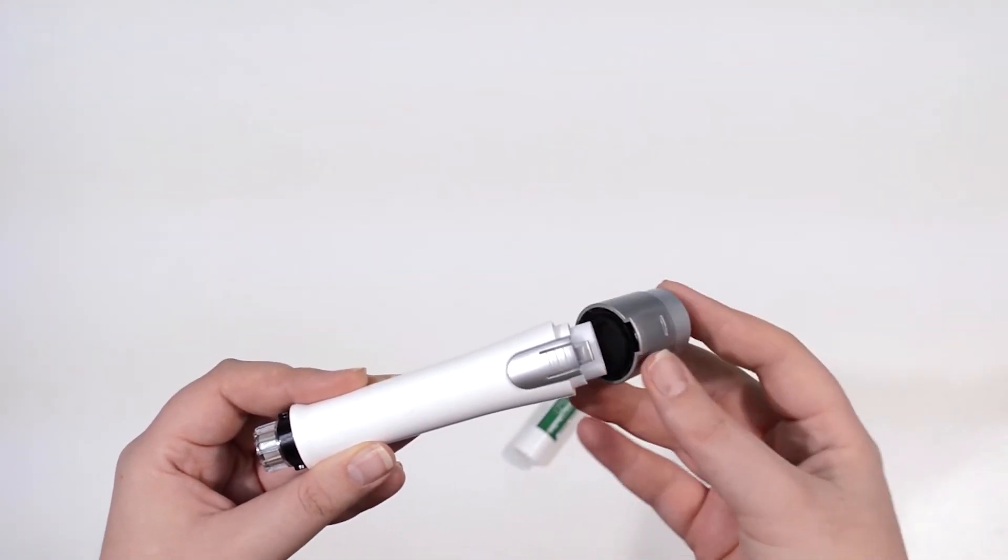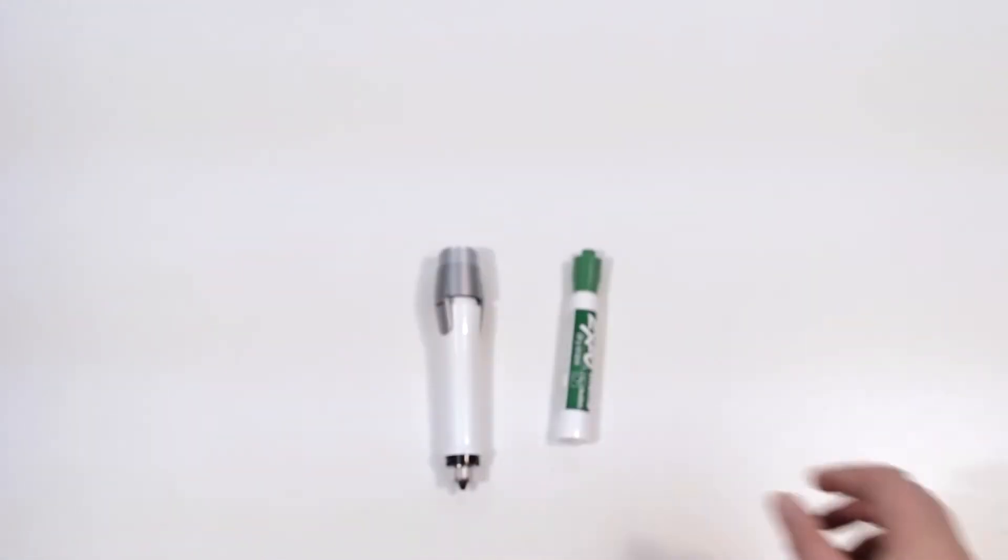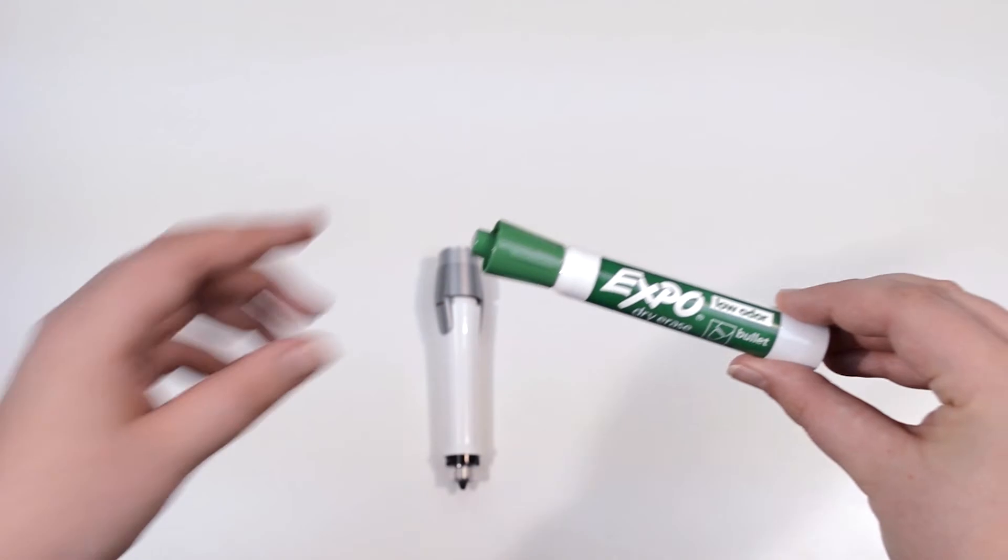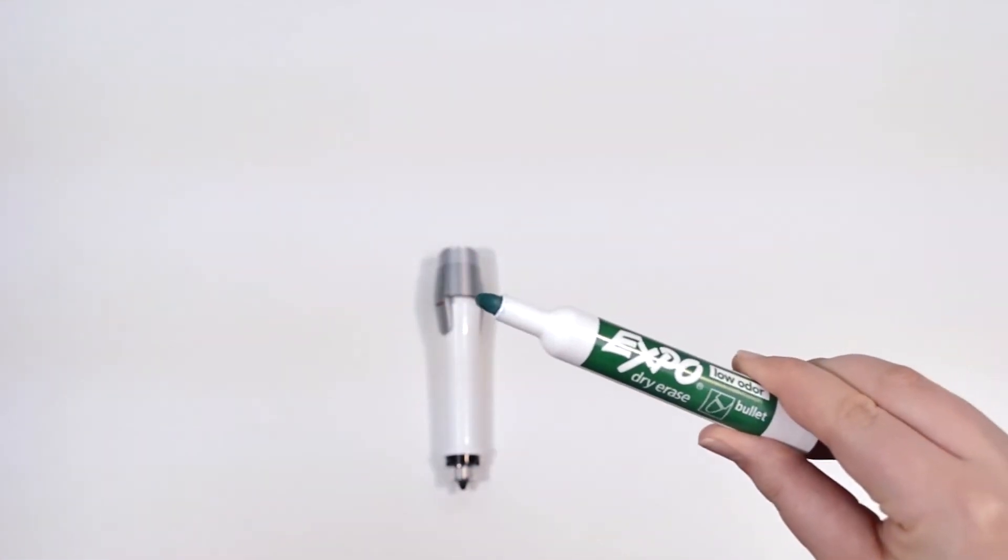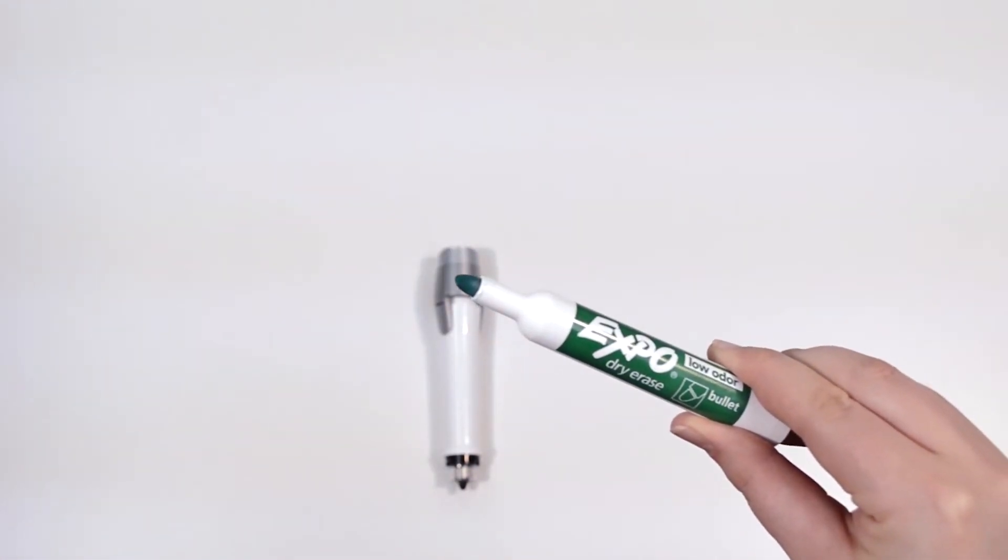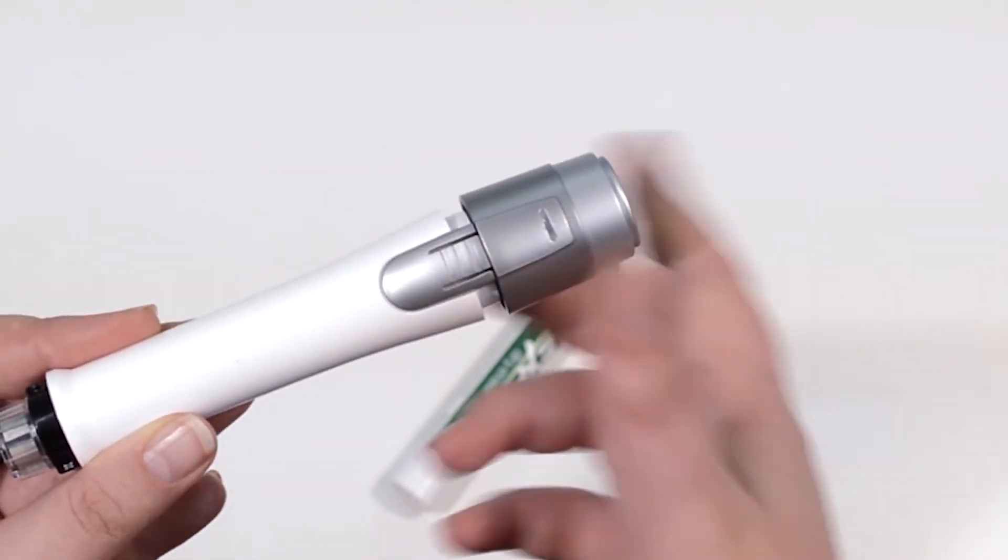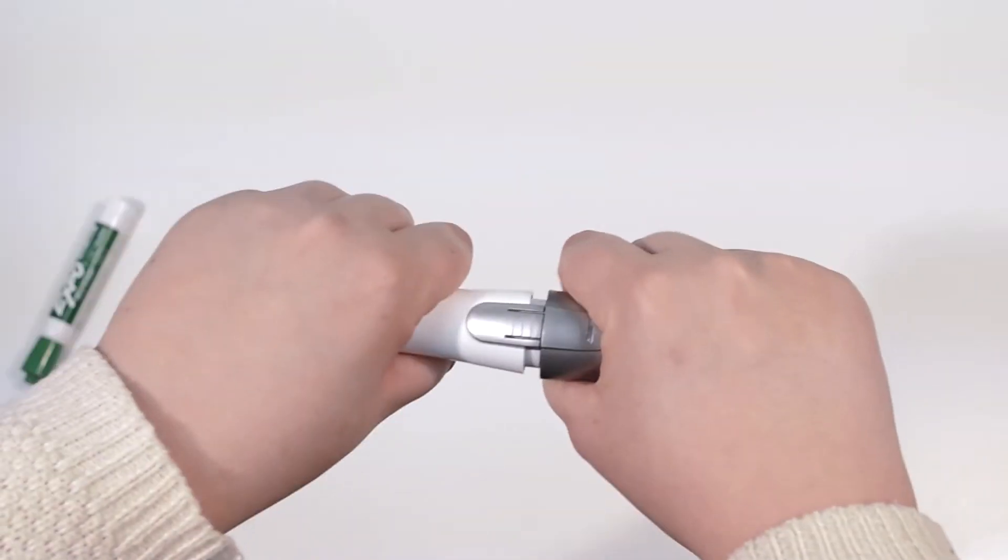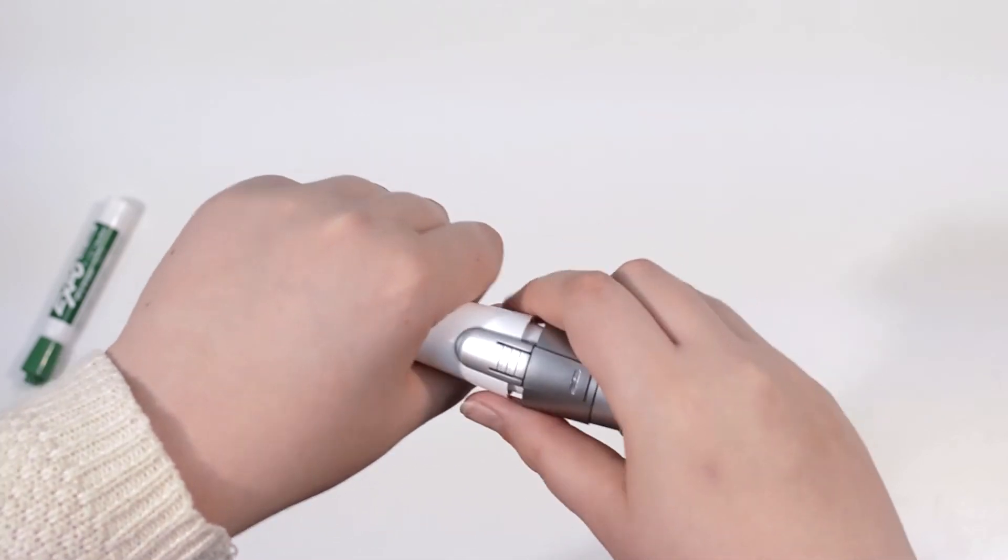Next, insert your whiteboard marker into the digital marker. Most standard dry erase markers can be used, like this regular Expo marker we have here. To remove the marker from your marker sleeve, simply press the button to release the cap. Do not twist or pull the cap off or it will break.